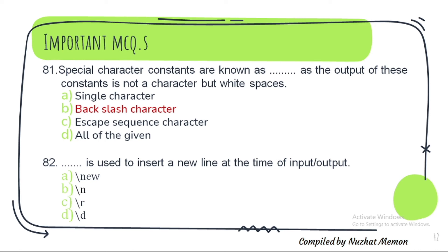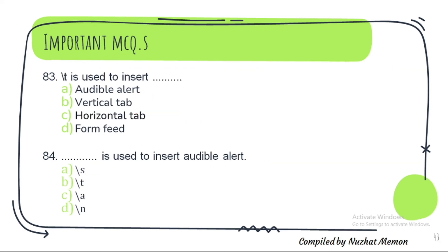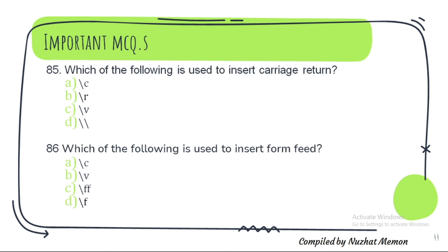Question 82: \n is used to insert a new line at the time of input or output. Question 83: \t is used to insert horizontal tab. Question 84: \a is used to insert an audible alert. Question 85: Which of the following is used to insert carriage return? It is \r — option B.